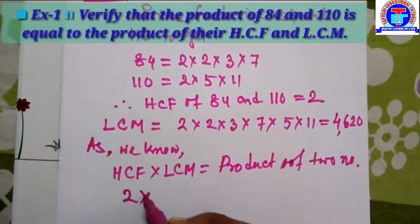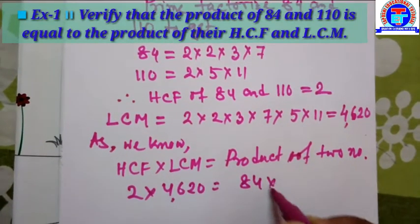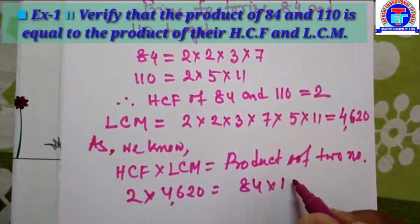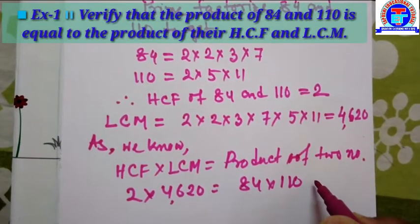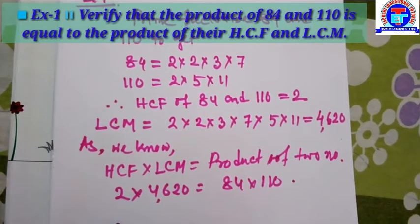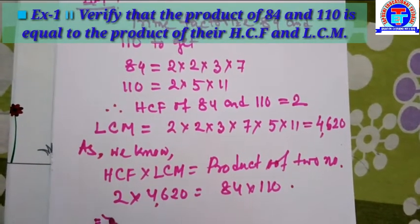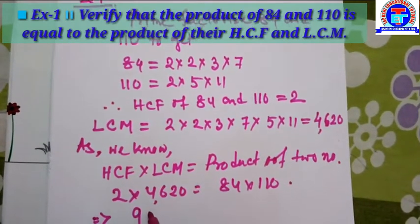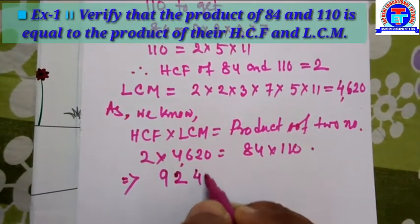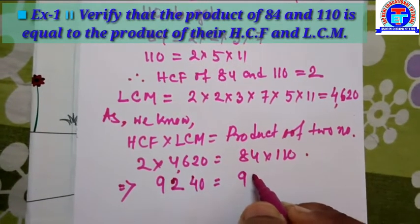So writing the formula: 2 into 4620 is equal to 84 into 110. This gives 9240, and that side also gives 9240.